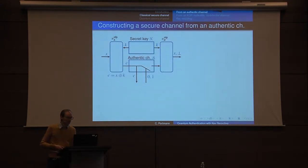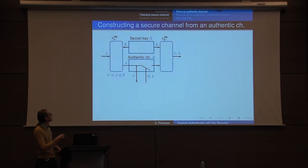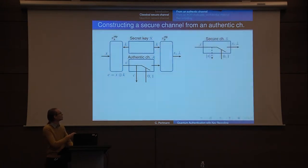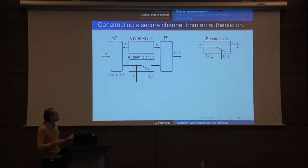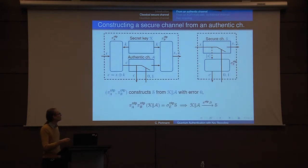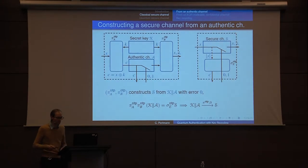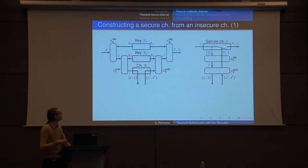Now we have an authentic channel — let's construct a secure channel. We do the obvious thing: a one-time pad. Alice just one-time pads her message, sends it on the authentic channel, and Bob inverts the one-time pad on his side. We want to argue this constructs a secure channel, which is very similar to the authentic channel except it only leaks the size of the message. To prove this, we need to find a simulator — which is trivial: it just outputs a completely random string, and you can show these are completely indistinguishable.